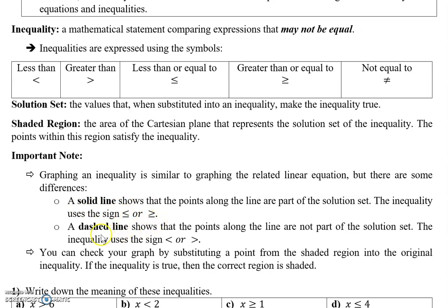On the other hand, when there is a dashed line, it shows the points along the line are not part of the solution set, and the inequalities used will be less than or greater than. You can check your graph by substituting a point from the shaded region into the original inequality — if the inequality is true, then the correct region is shaded.